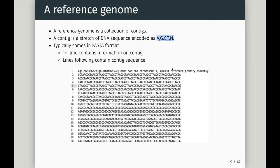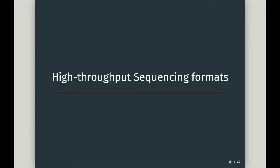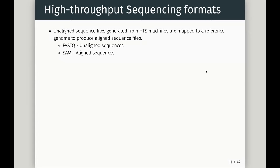The FASTA format has sequence information and a header line describing each sequence — that's our reference genome and it's essential. What Connie was describing was producing unaligned sequence files from high-throughput sequencing machines. A primary processing step — probably the first thing after QC — is taking our unaligned sequences and mapping them to the reference genome to produce an aligned sequence file, typically in SAM format.